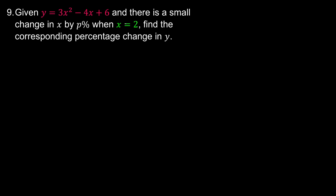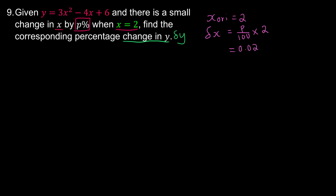Find the corresponding percentage change in y. They tell us that x is going to experience a small change by p percent, but the original x is 2. The delta x is going to be p percent, meaning p over 100 times the original x, which is 2. So delta x equals 0.02p.